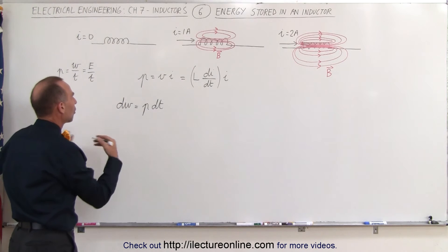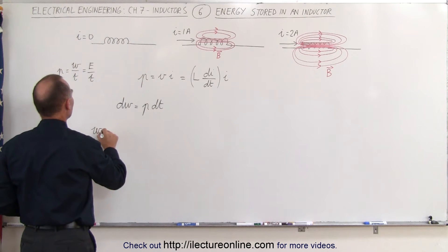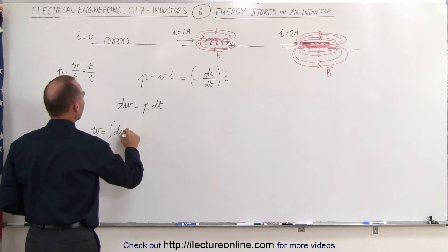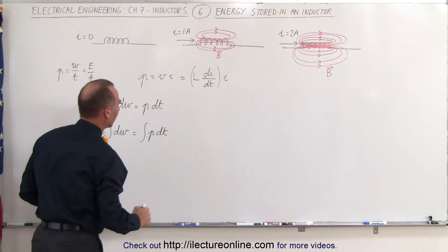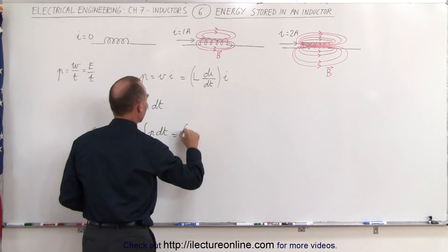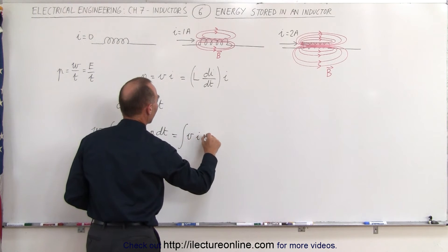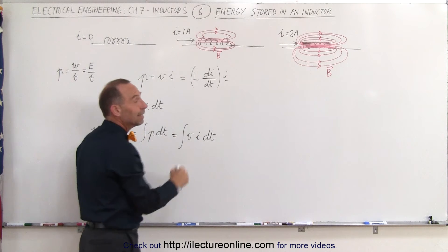Now to have the total work done which is equal to the total energy stored in the inductor, we can say that W is equal to the integral of dW which is equal to the integral of P times dt. And of course P can be written as V times I, so this is equal to the integral of V times I times dt, and instead of writing V we can write L times dI/dt.